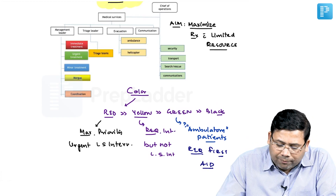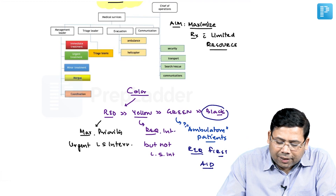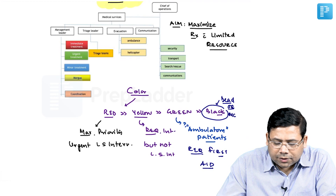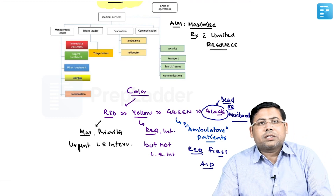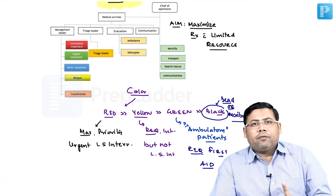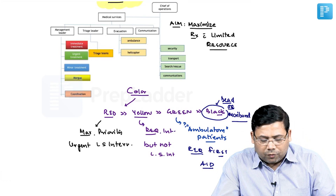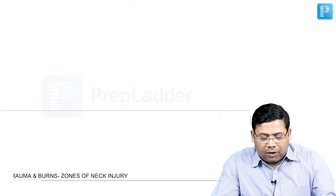When we talk about the black patients, they are either dead or about to die — dead or moribund patients. This is very important.